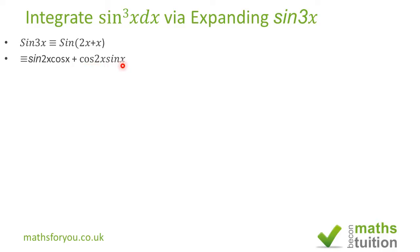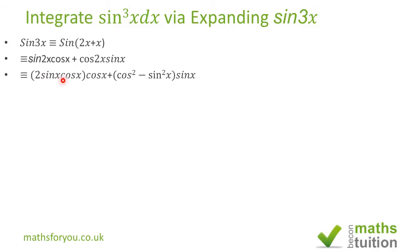Now if we expand this and change that as well: sine 2x becomes 2 sine x cos x, and then we multiply by cos x. Then cos 2x becomes cos squared x minus sine squared x, multiplied by sine x.